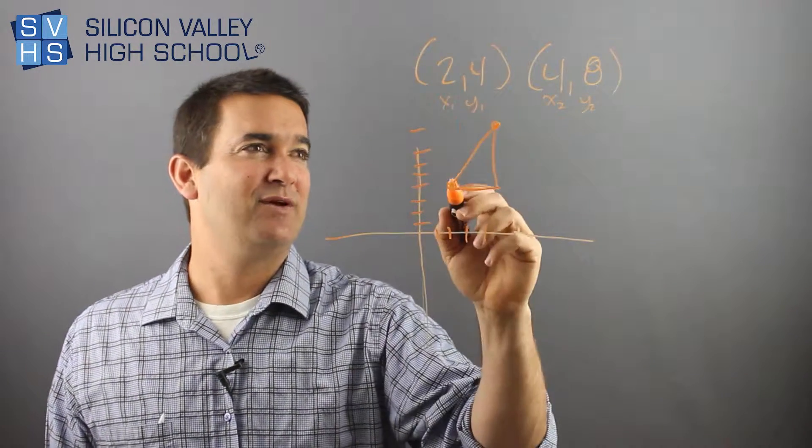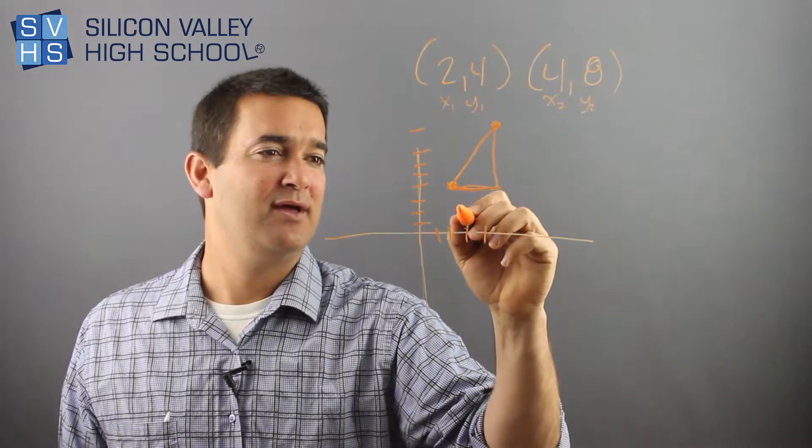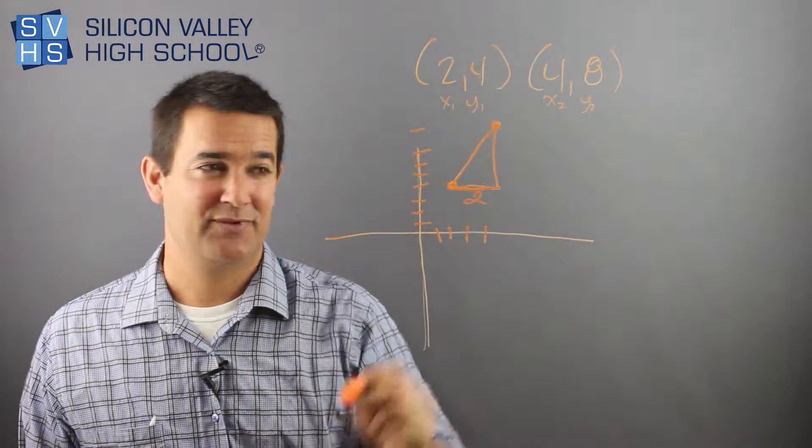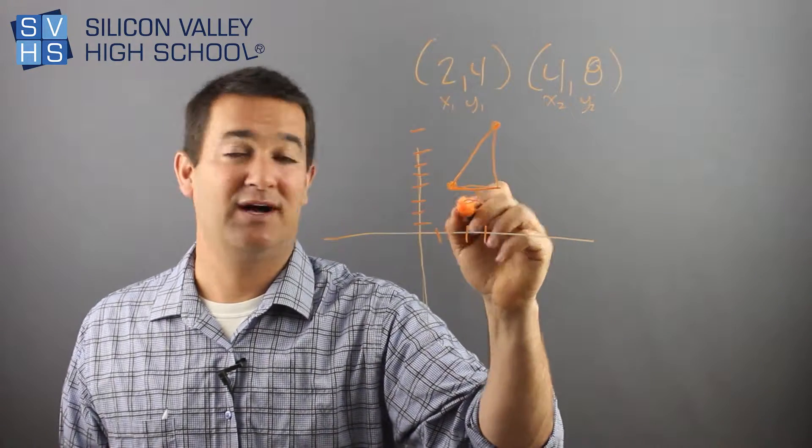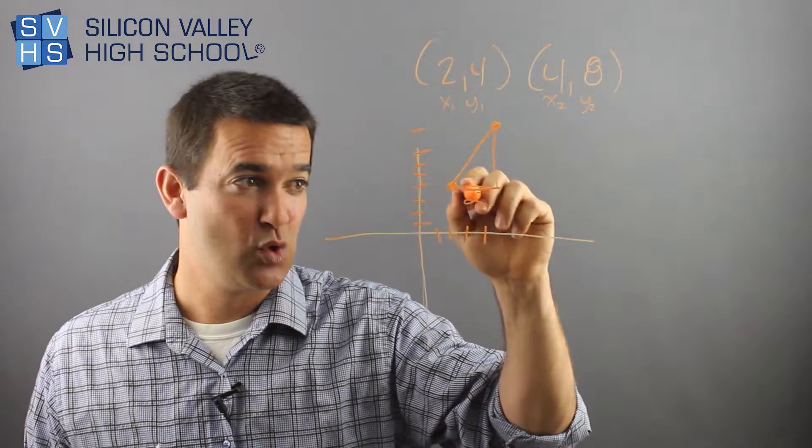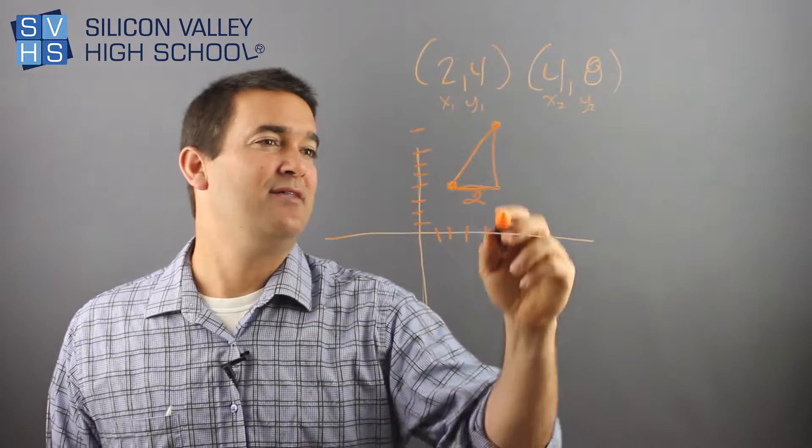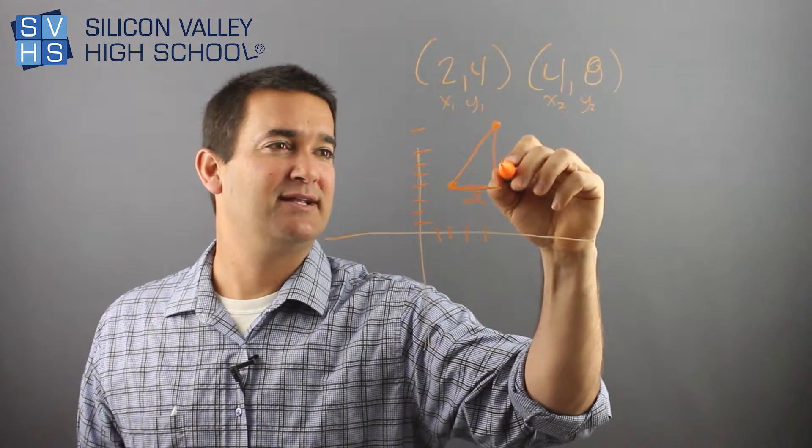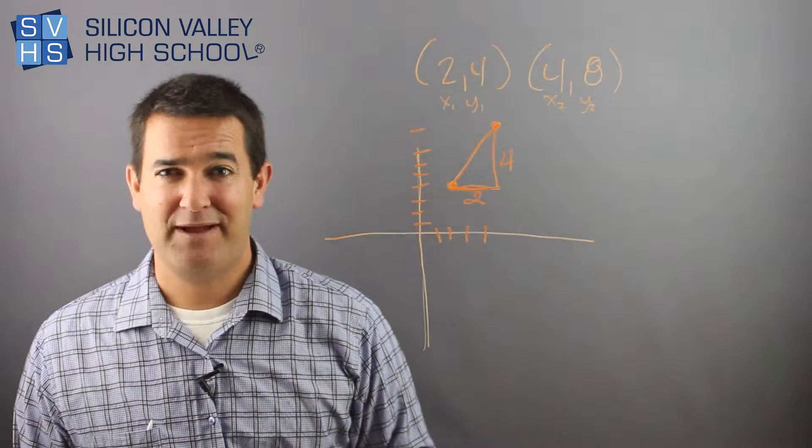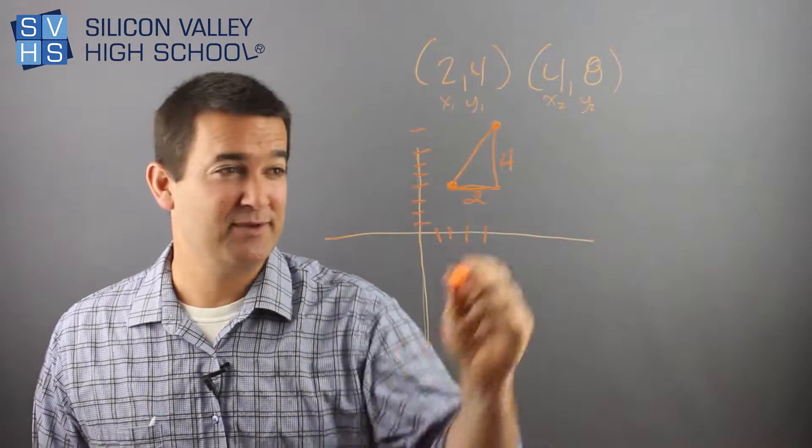And obviously, if this went from 2 to 4, we could count this. This would be two spaces, right? This was at 2 and this is at 4. So that's 2 across. And if you had graph paper, you could actually count them out. Then from the y, it went from 4 up to 8, right? So that is the distance of 4. And again, graph paper, this is not quite as cool as graph paper, but you could count it. 1, 2, 3, 4, right?